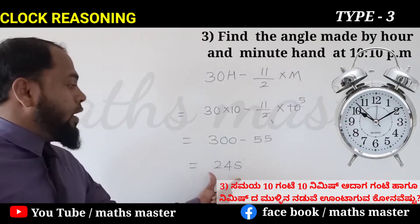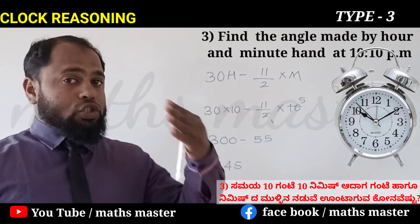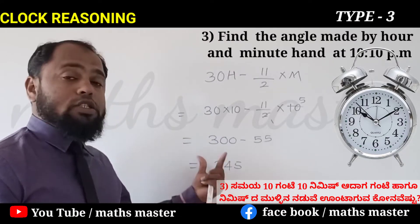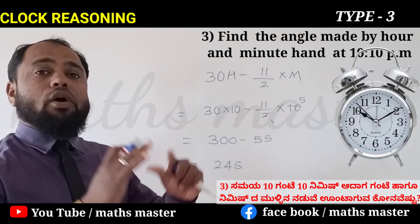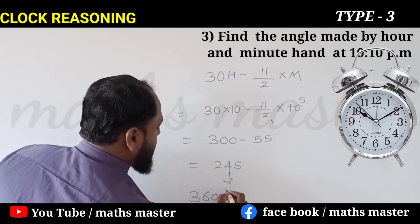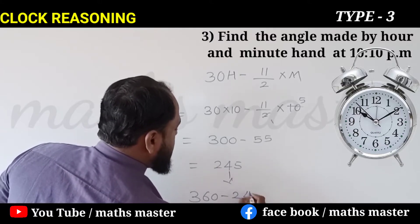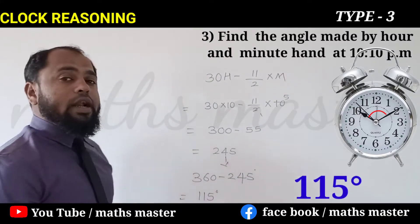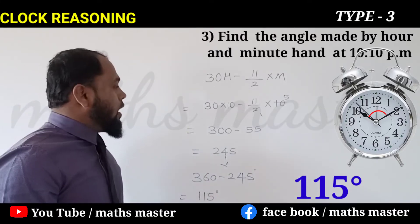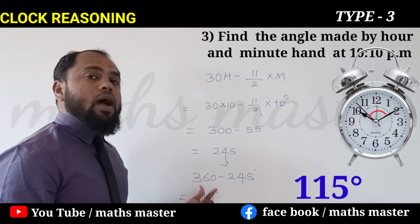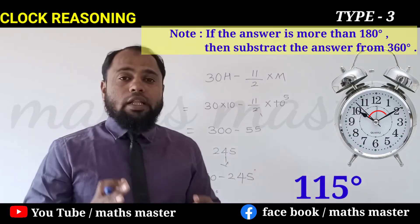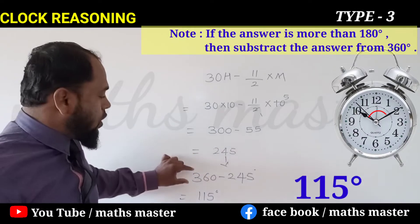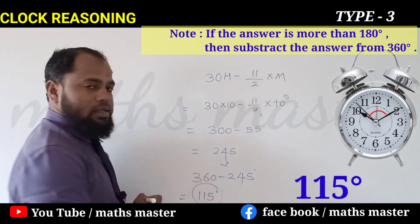245 is more than 180. If the answer is more than 180, then we have to subtract that answer from 360. So 360 minus 245 equals 115. The answer is 115 degrees. If the answer is more than 180, subtract from 360 to get the final answer.